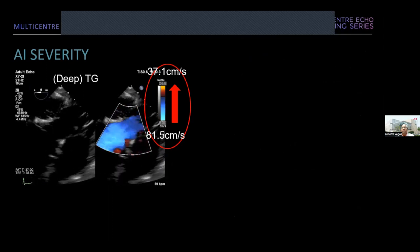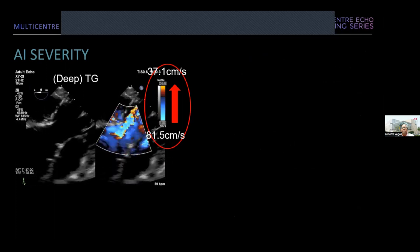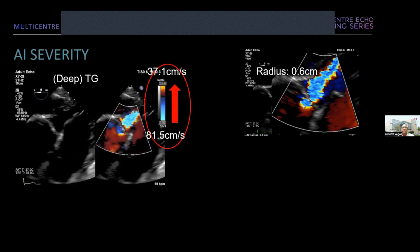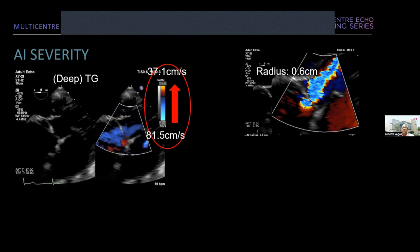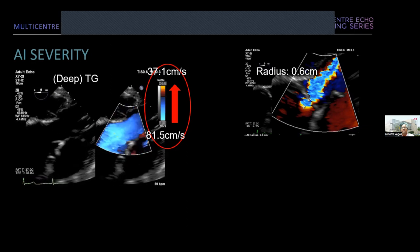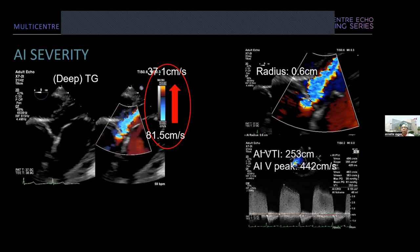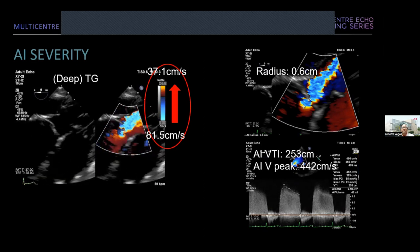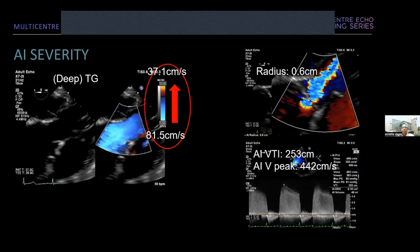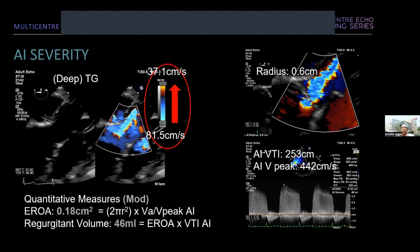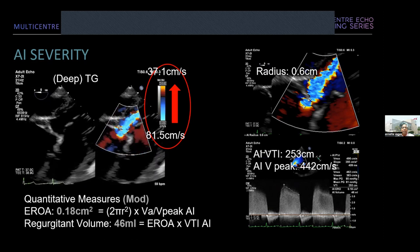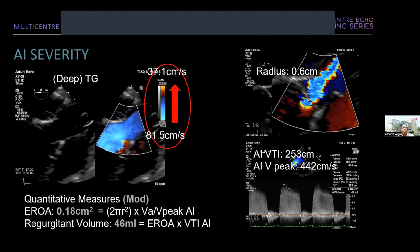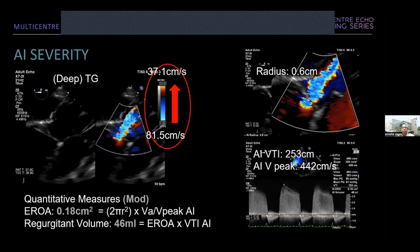Most of us don't use quantification, but you can use it here. Going to the transgastric views — this is a deep transgastric view showing the AI jet, which fortunately aligns well with spectral Doppler. The PISA hemisphere radius is 0.6 cm. The software can automatically calculate the EROA, which came out to 0.18 cm², and the regurgitant volume was 46 mL — all suggesting at least moderate AI in this patient.